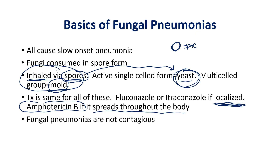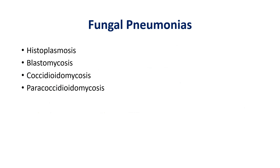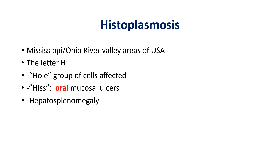Those are the basics of fungal pneumonias. Now, the four main types we're going to cover are: histoplasmosis, blastomycosis, coccidioidomycosis, and paracoccidioidomycosis. For all of these, I've developed mnemonics using the first letter of each fungus name to keep things simple.